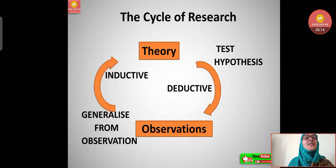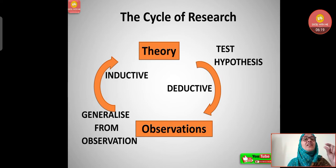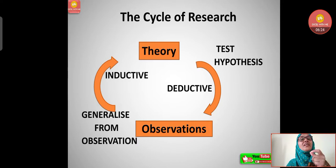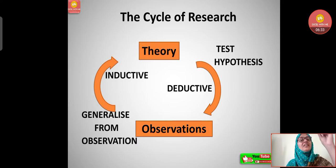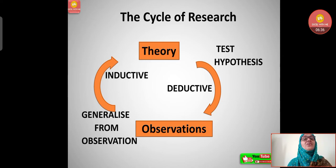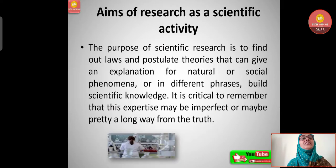What is the cycle of this research? First, theory. In deductive research, you test the hypothesis and move to observations. In inductive research, you make generalizations from observations and then arrive at theory. This is the cycle of research.